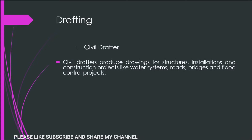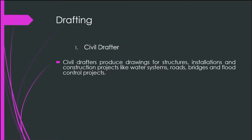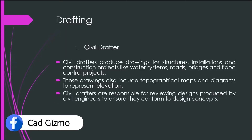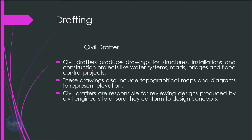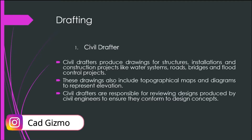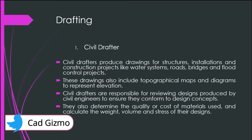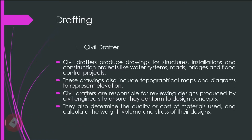The first type is the civil drafter. Civil drafters produce drawings for structures, insulation and construction projects like water systems, roads, bridges and flood control projects. These drawings also include topographical maps and diagrams to represent elevation. Civil drafters are responsible for reviewing designs produced by civil engineers to ensure they conform to design concepts. They also determine the quality or cost of material used and calculate the weight, volume and stress of their designs.